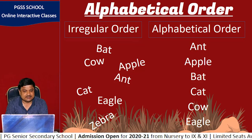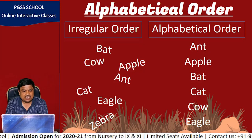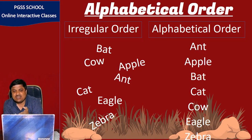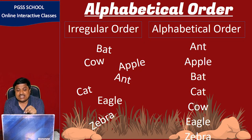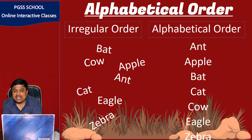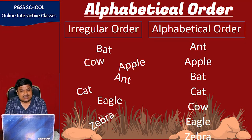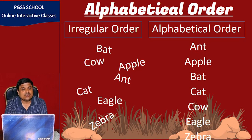Here some examples have been given in irregular order. The words are: bat, cow, apple, ant, cat, eagle, zebra. After writing them in alphabetical order: first ant, then apple, then bat, then cat, then cow, then eagle, then zebra. This process is alphabetical order.